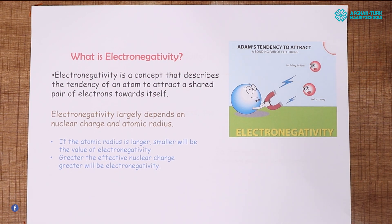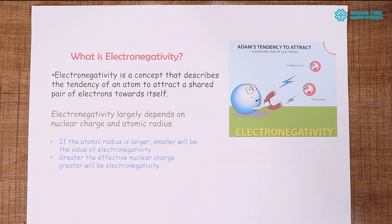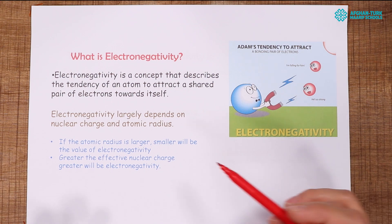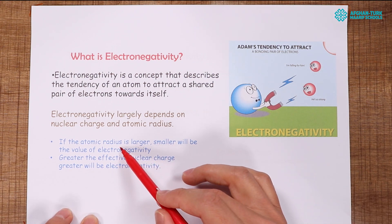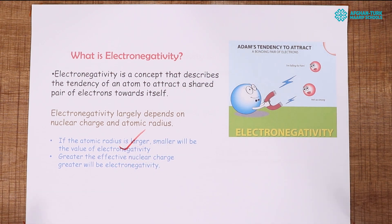If an atom does not want to lose electrons and wants to gain electrons, that atom is electronegative. Electronegativity depends on atomic radius and nuclear charge. If the atomic radius is larger, the electronegativity value will be smaller; if the atomic radius is smaller, the electronegativity value will be larger.